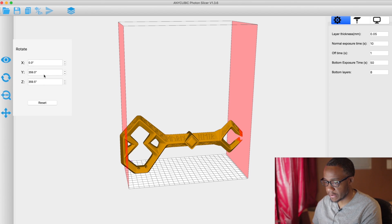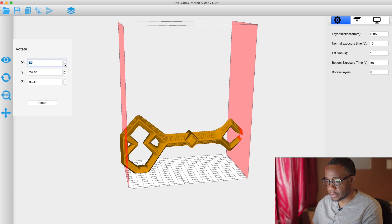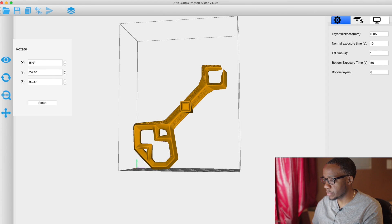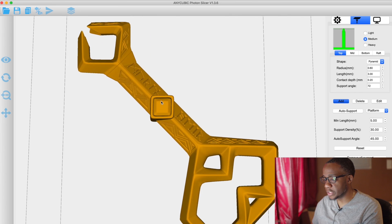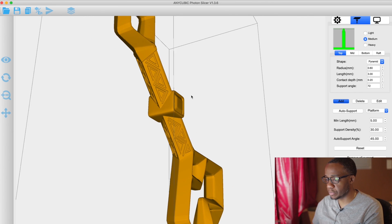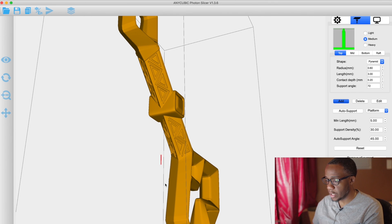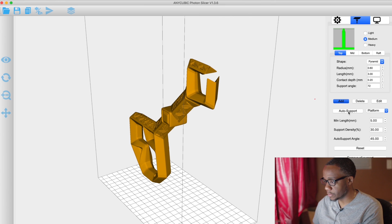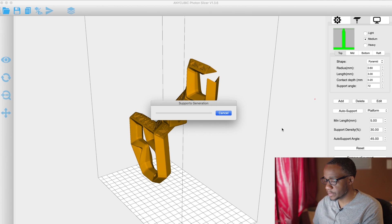I'm going to utilize that, but first I want to turn the key on a 45 degree angle. Then I'm going to run the automated supports. I'm choosing to print it this way because the supports will run along the bottom here, keeping them along the middle portion of the key.